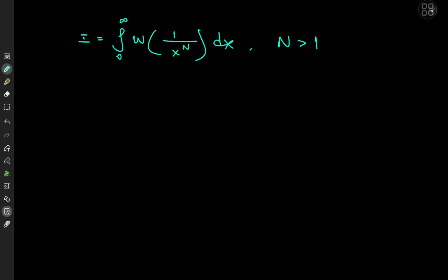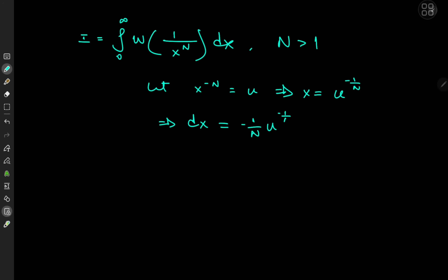We'll begin with the argument of the Lambert W function, that is the 1 over x to the n, and I'd like to transform this by letting x to the minus n equal u, which implies on differentiating — actually, let me write this out first: x equals u to the negative 1 over n, and dx equals negative 1 over n times u to the negative 1 over n minus 1, du. Now for the limits of integration: as x approaches 0, with n greater than 1, u approaches infinity, and as x approaches infinity, u approaches 0, so the limits are effectively switched.